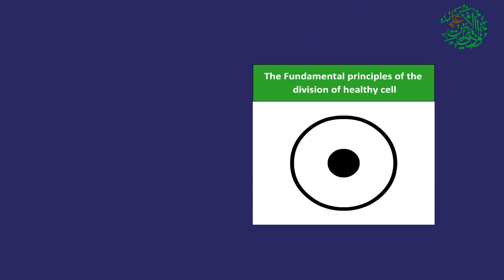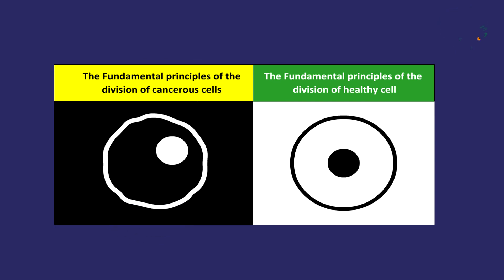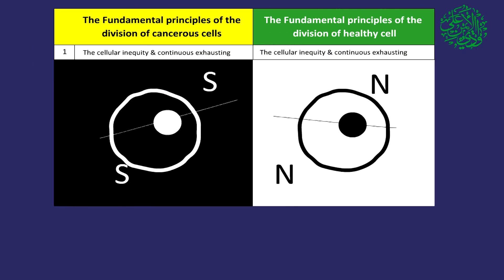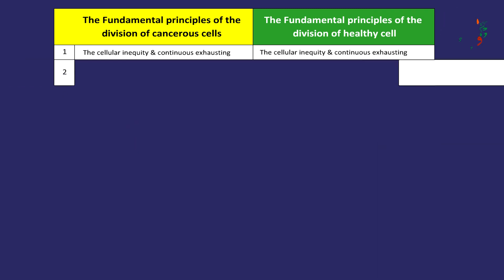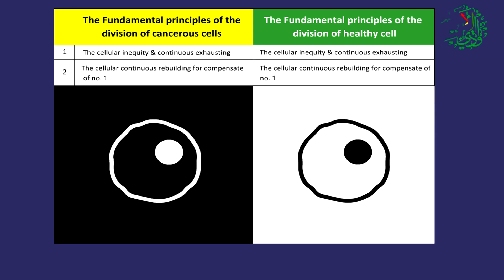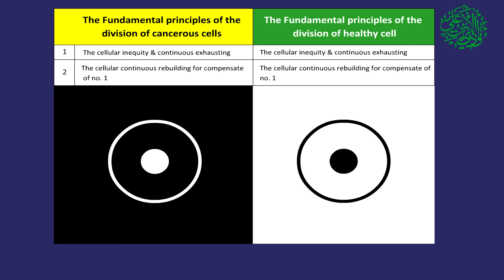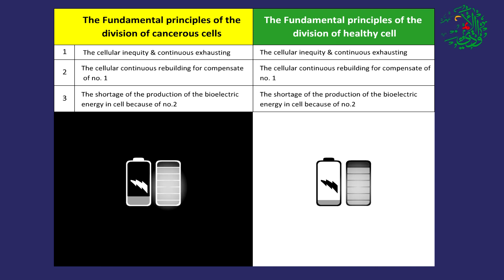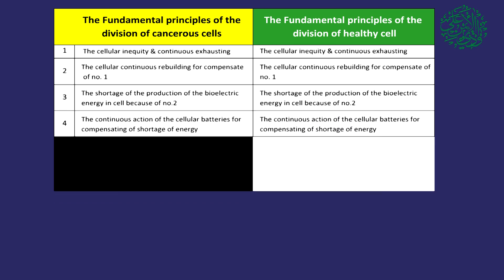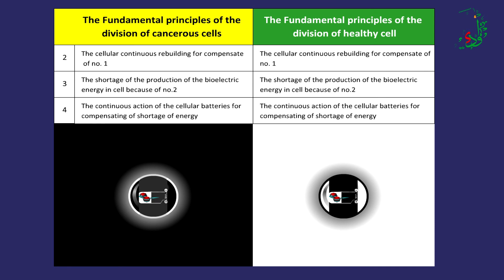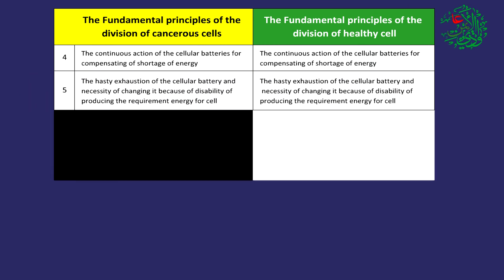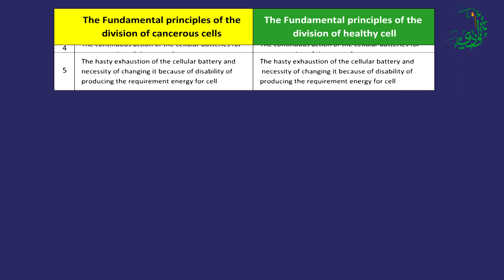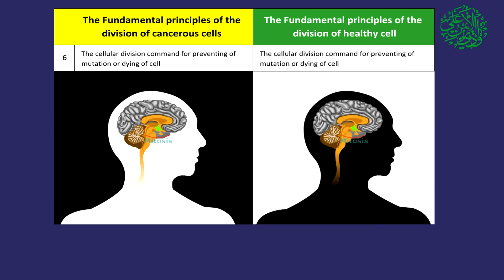Fundamental principles of division of healthy cells and cancerous cells: 1. Cellular imbalance and continuous cell exhaustion. 2. Continuous cellular reconstruction to repair item number 1. 3. Shortage of production of bioelectric energy in the cell due to item number 2. 4. Continuous function of cellular batteries for overcoming shortage of energy. 5. Early exhaustion of cellular battery and necessity of changing it due to incapability of producing the needed energy. 6. The cellular division command for preventing cellular demise or death.